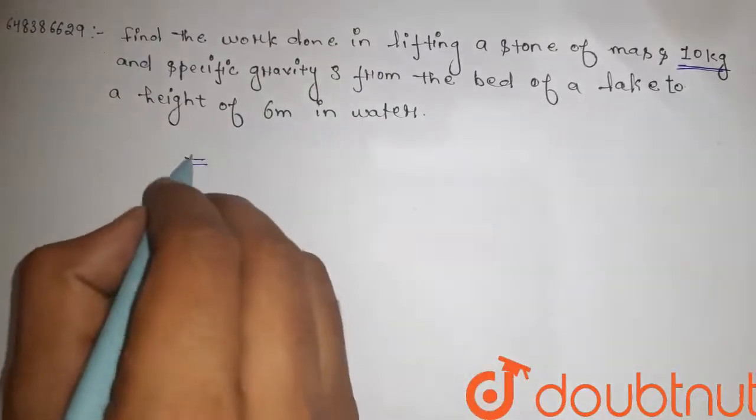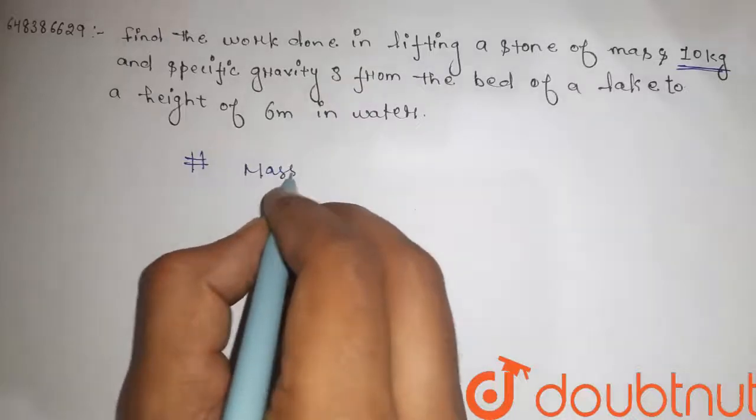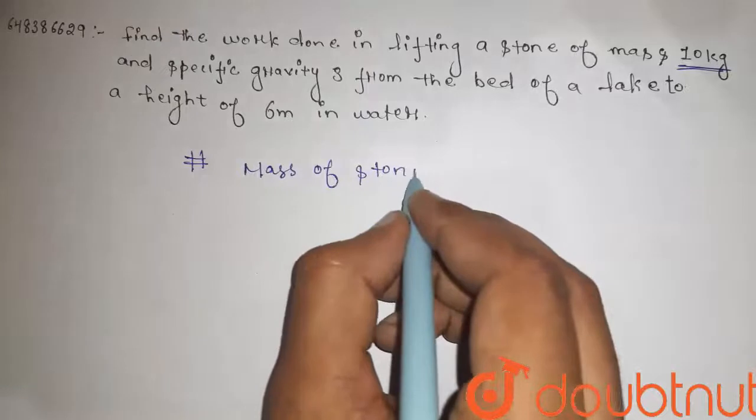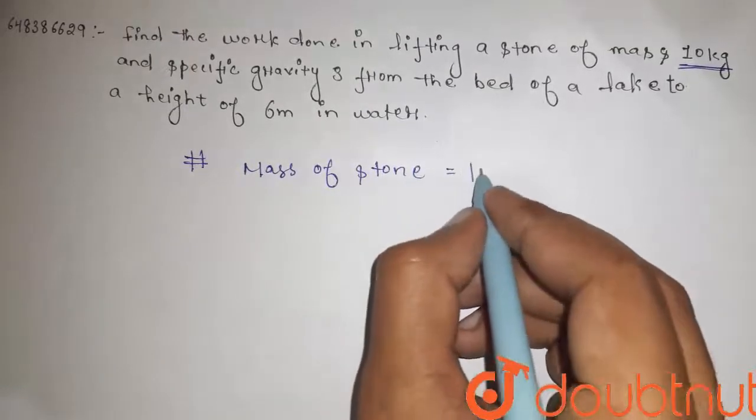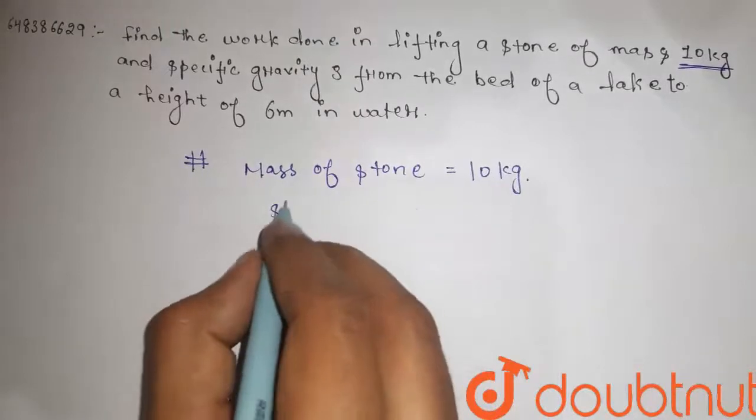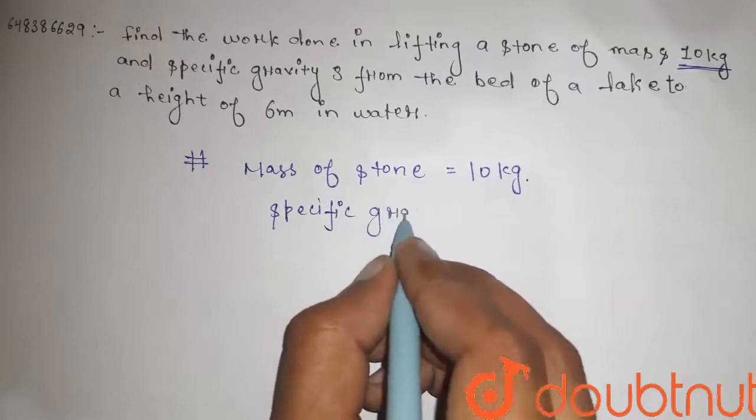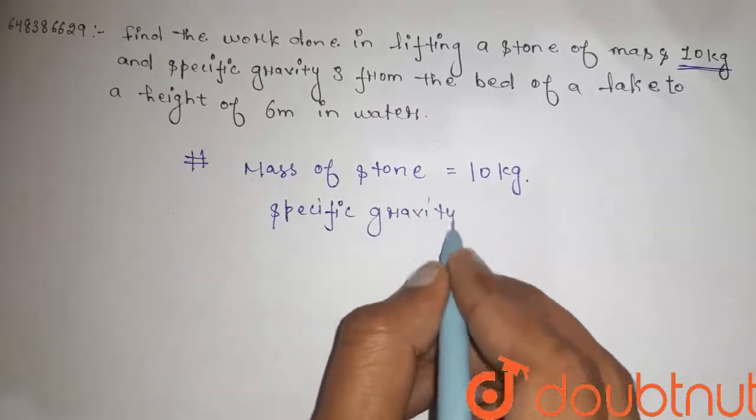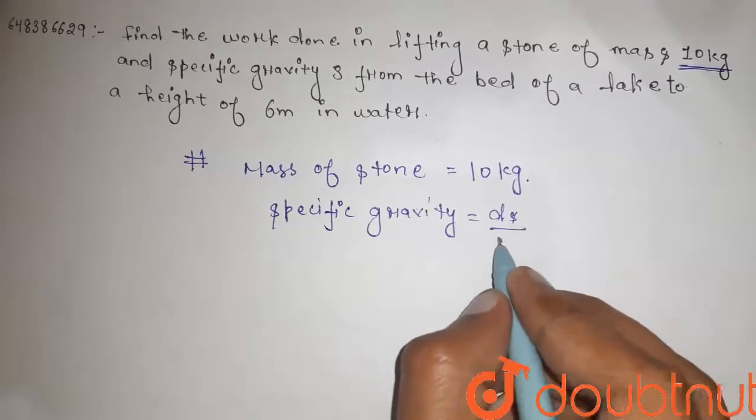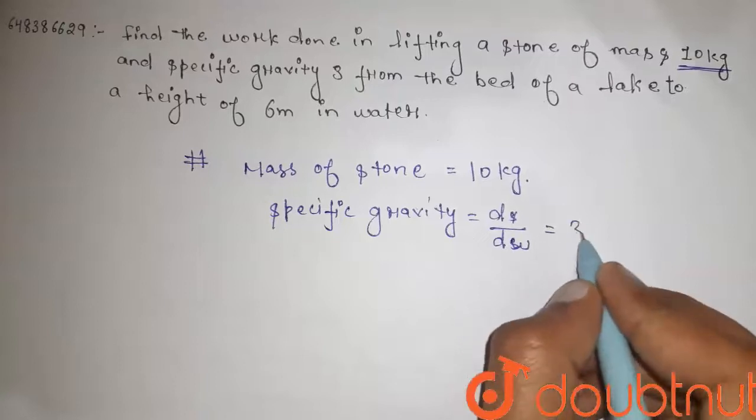So guys, here the mass of the stone is equal to 10 kg and specific gravity, that is density of solid with respect to density of water, is 3.